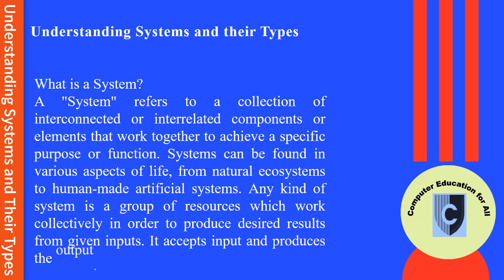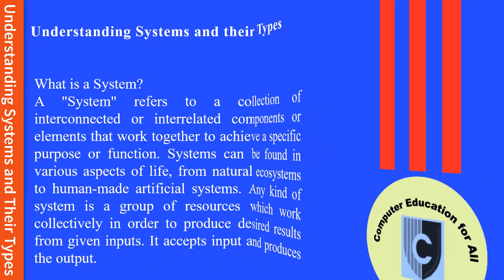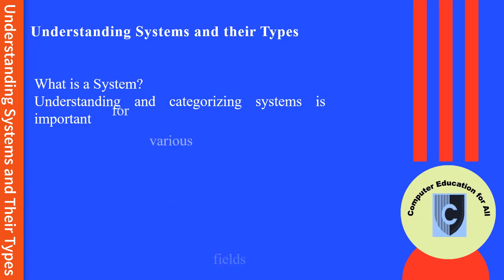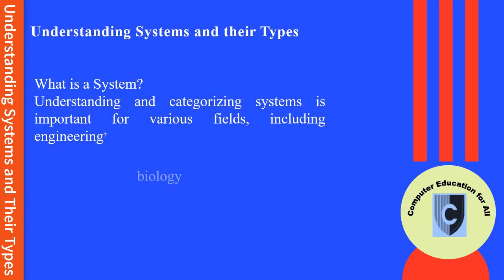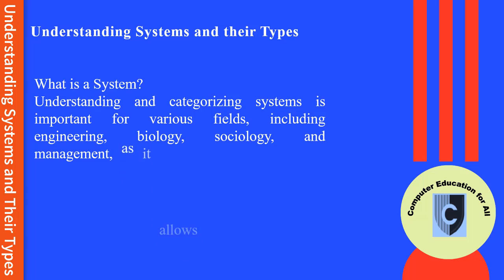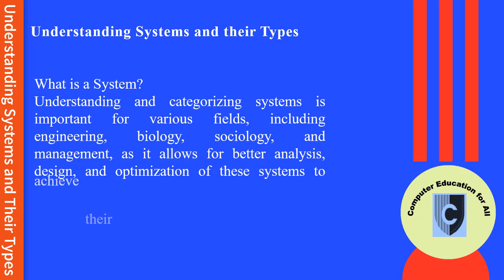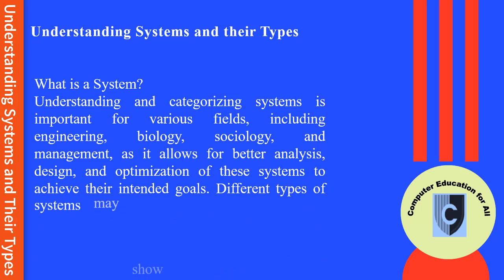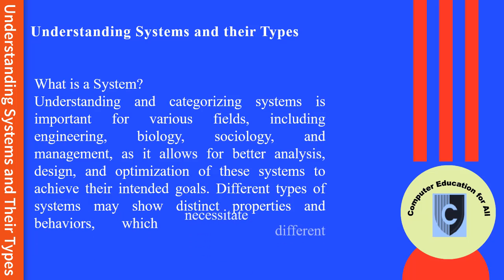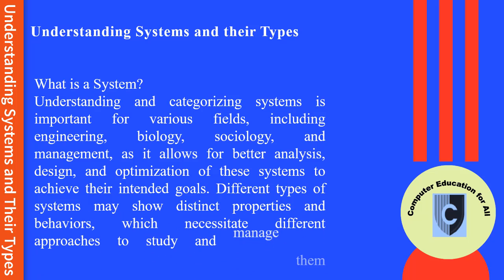It accepts input and produces the output. Understanding and categorizing systems is important for various fields including engineering, biology, sociology, and management, as it allows for better analysis, design, and optimization of these systems to achieve their intended goals. Different types of systems may show distinct properties and behaviors which necessitate different approaches to study and manage them effectively.